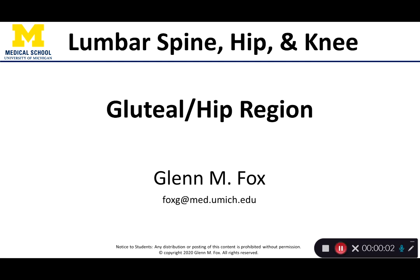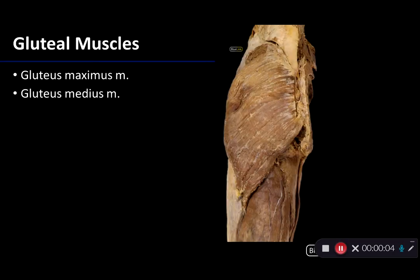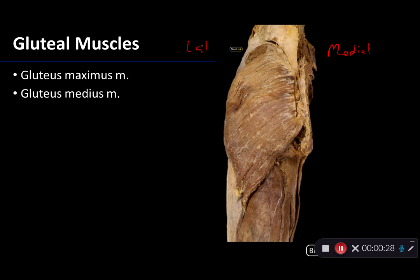Let's talk about the gluteal and hip region. What we're looking at here is a hemisected pelvis with the proximal portion of the left lower limb from a posterior view. This side would be medial, and this therefore would be lateral.